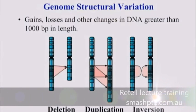What I'm going to focus on today is really different: larger forms of genetic variation involving essentially gains, losses, and inversions of sequence.